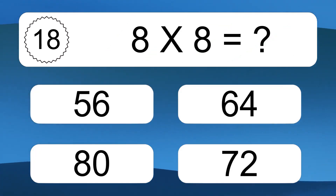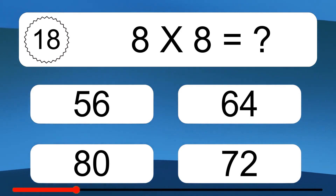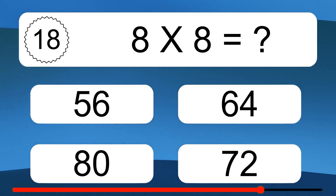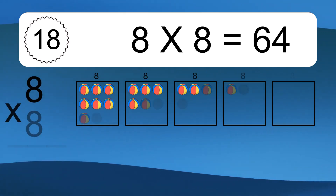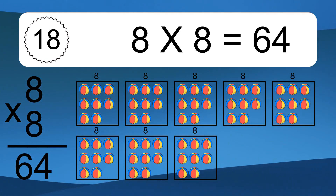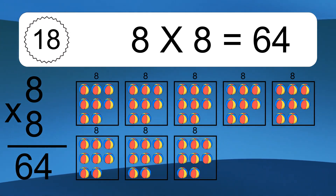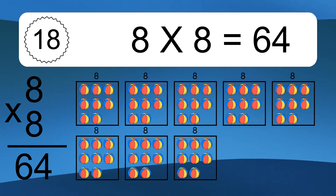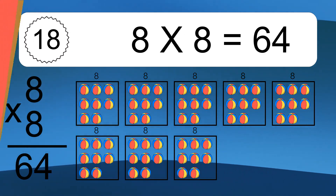8 times 8 equals what? 8 times 8 equals 64. We have 8 boxes, and each box has 8 colorful balls inside. If you count all the balls in all the boxes together, you will have 8 times 8 balls. This equals 64 balls.